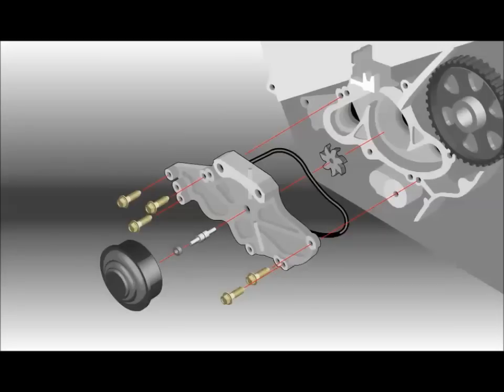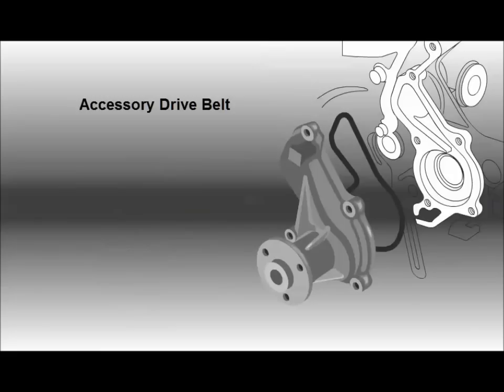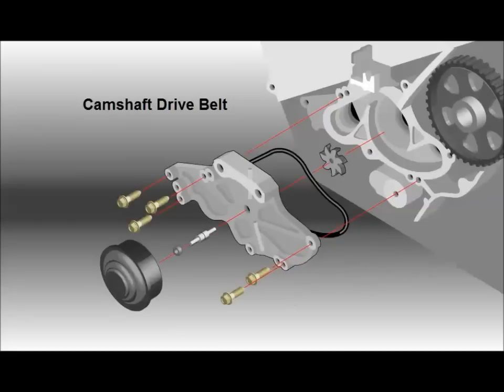The water pump uses an engine-driven impeller to draw water from the radiator and pump it into the engine water jacket. This pump may be driven by an accessory drive belt or by the camshaft timing belt.